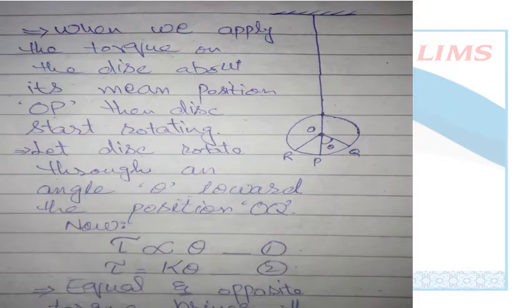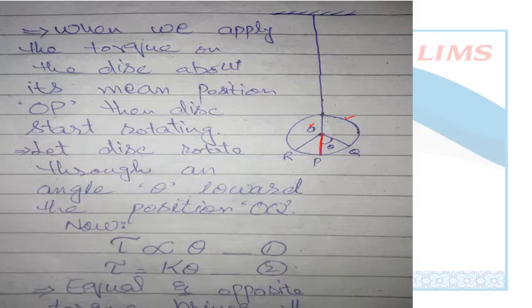We have a disk. This disk has a center. The center of the disk is the mean position. Here we have the mean position labeled O, and the point Q is marked. These represent different positions of the disk.